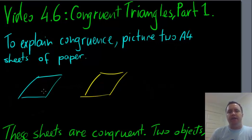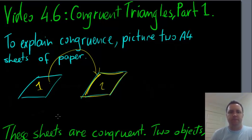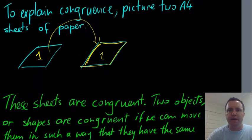And if I grab this sheet here, sheet number one, and here's sheet number two, I'll grab sheet number one and I picked it up, and I put it on top of sheet number two, so that sheet number one is right over the top of sheet number two. We could say that these two sheets of paper are congruent.